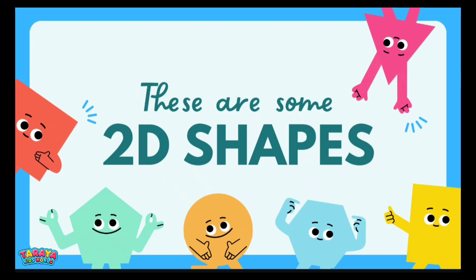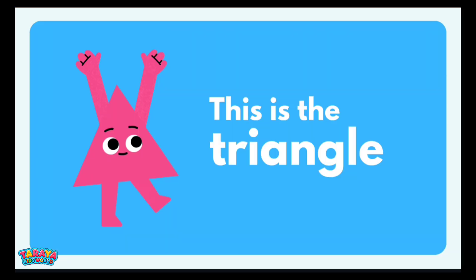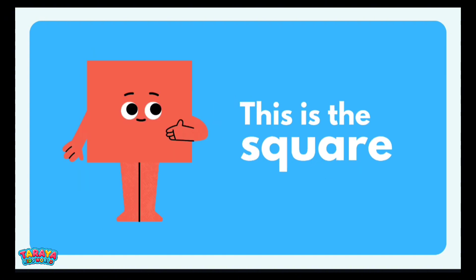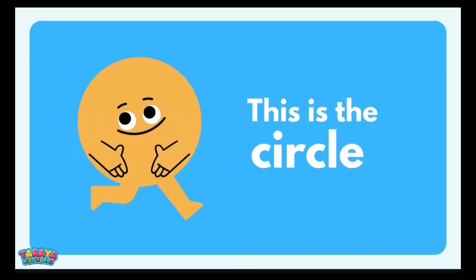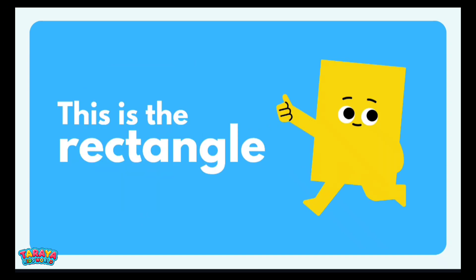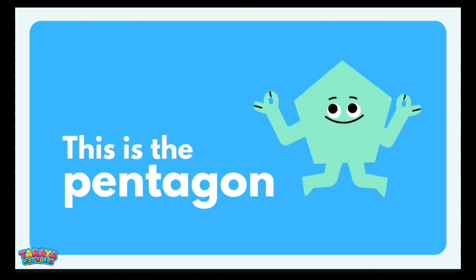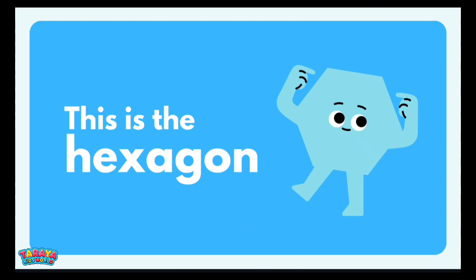Again, these are some 2D shapes. This is the triangle. This is the square. This is the circle. This is the rectangle. This is the pentagon. And this is the hexagon.